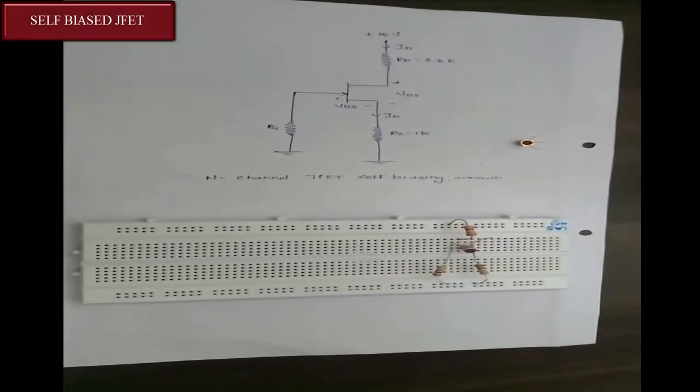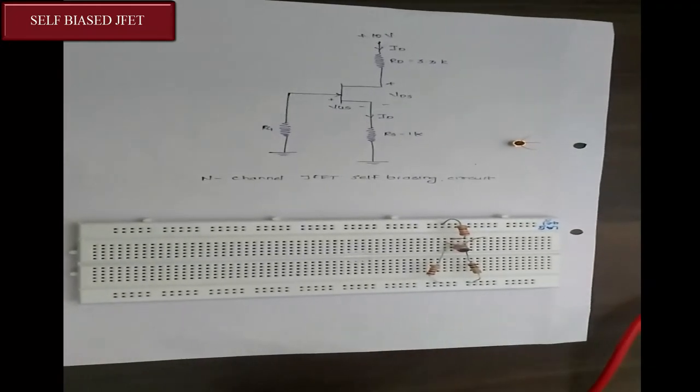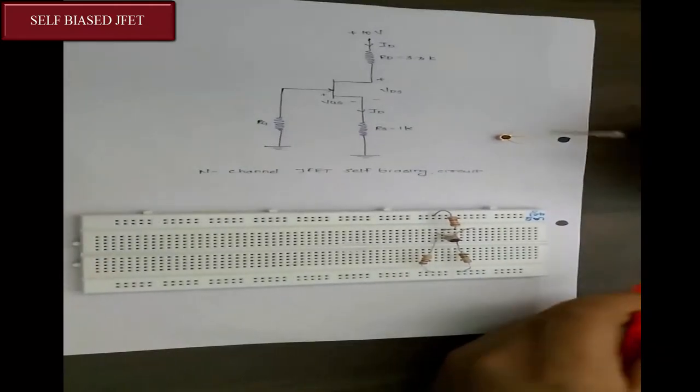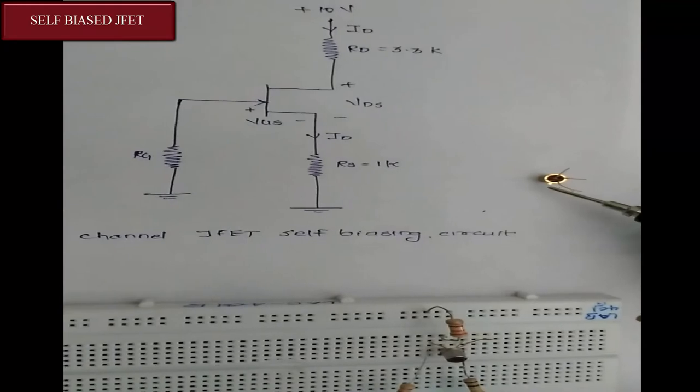So this is the breadboard implementation of self-biasing JFET. The JFET used here is BFW11. Here we can see the notch.